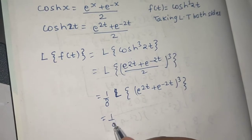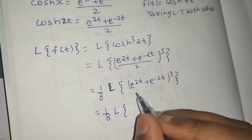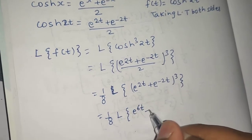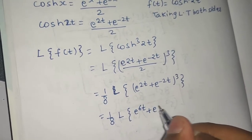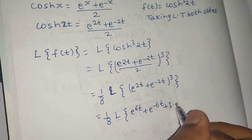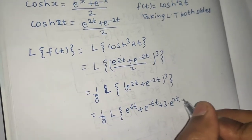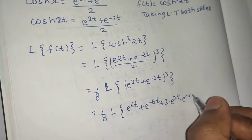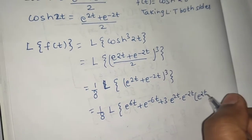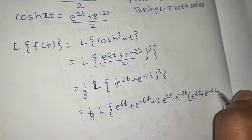This equals 1 by 8 times the Laplace of: a cube, which is e power 6t, plus b cube, which is e power minus 6t, plus 3ab times (a plus b), that means 3 times e power 2t times e power minus 2t times (e power 2t plus e power minus 2t).